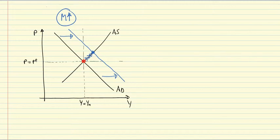This blue point is a short run equilibrium. At this blue point Y is larger than YN and P is larger than PE. That is a short run equilibrium where Y is not equal to YN and P is not equal to PE.